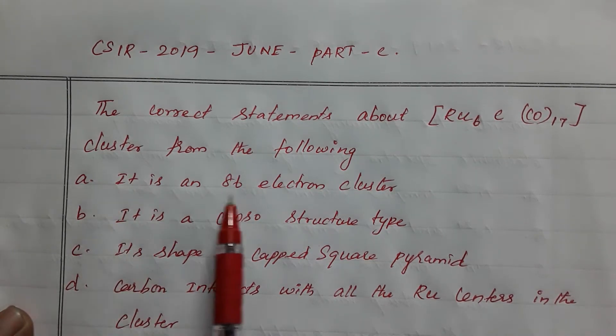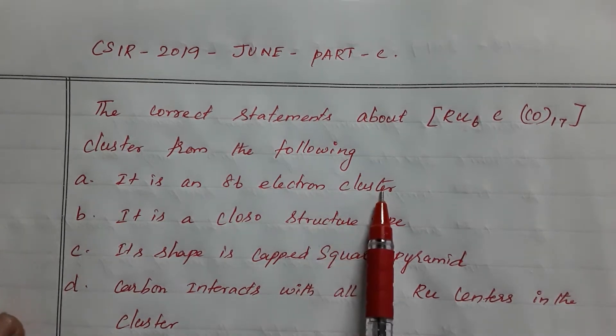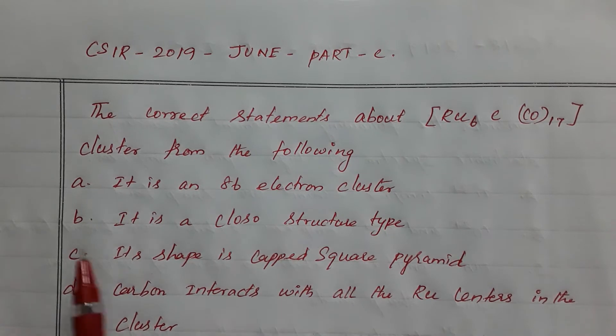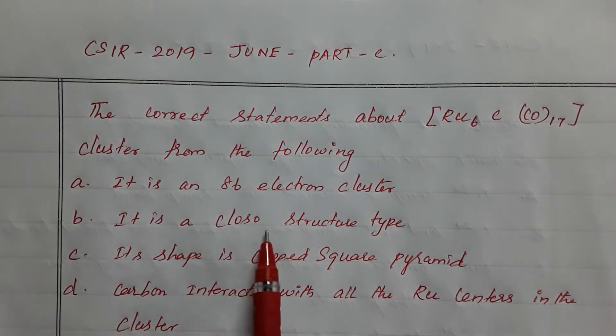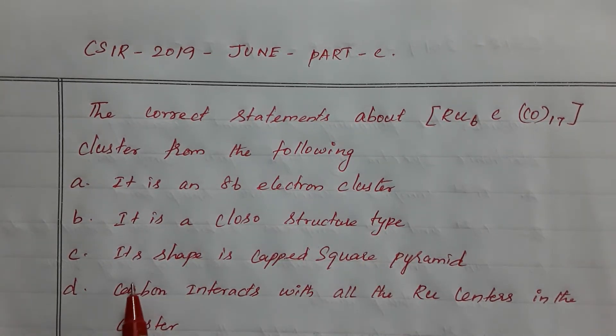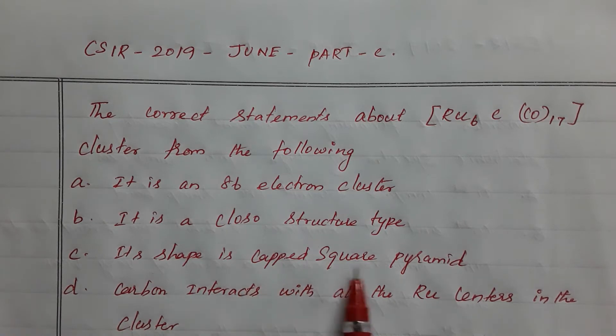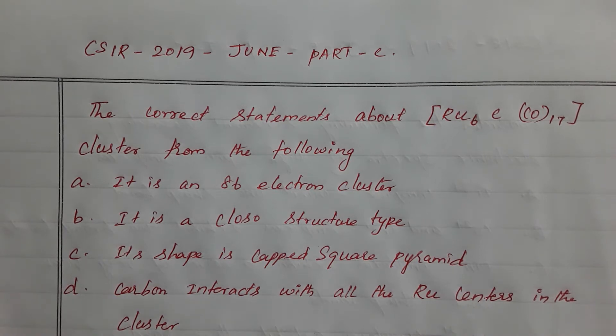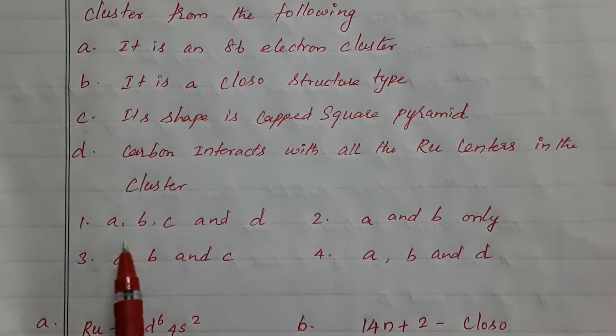First option: it is an 86 electron cluster. Second: it is a closo structure type. Option C: its shape is capped square pyramidal. The last one: carbon interacts with all the ruthenium centers in the cluster. After that, they give the options.